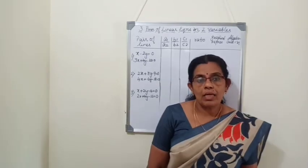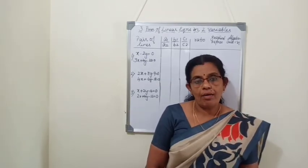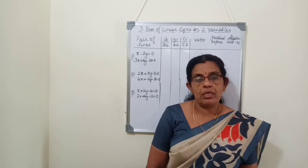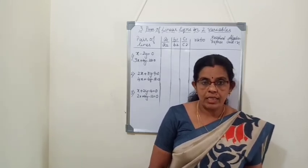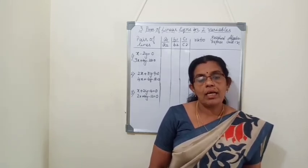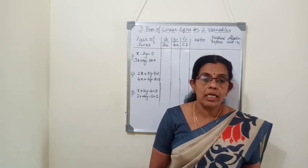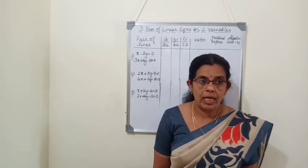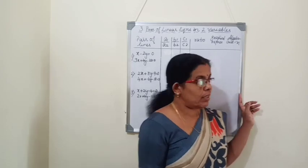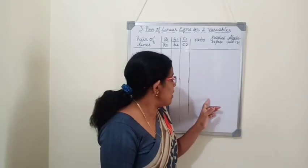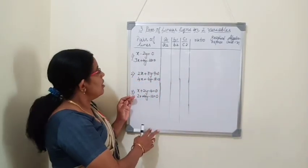Today, there are three possibilities when we draw the graph on a graph sheet. The first one is the lines will be intersecting. The second one is they are parallel lines. And the third is coincident lines. Without plotting the points in a graph sheet, we can check it using some formula.